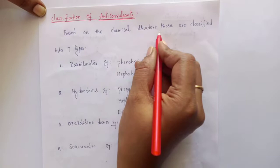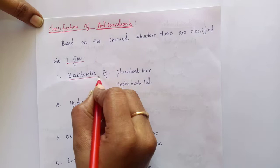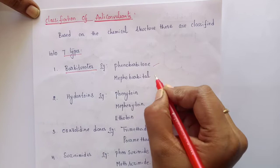Based on chemical structure, anticonvulsants are majorly classified into 7 types. The first class is barbiturates, which we have already discussed in sedatives and hypnotics. The examples of drugs are phenobarbital and mephobarbital.